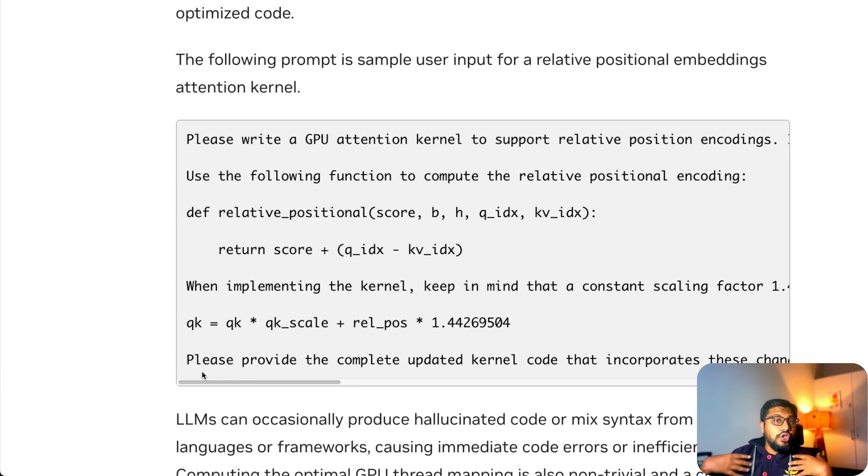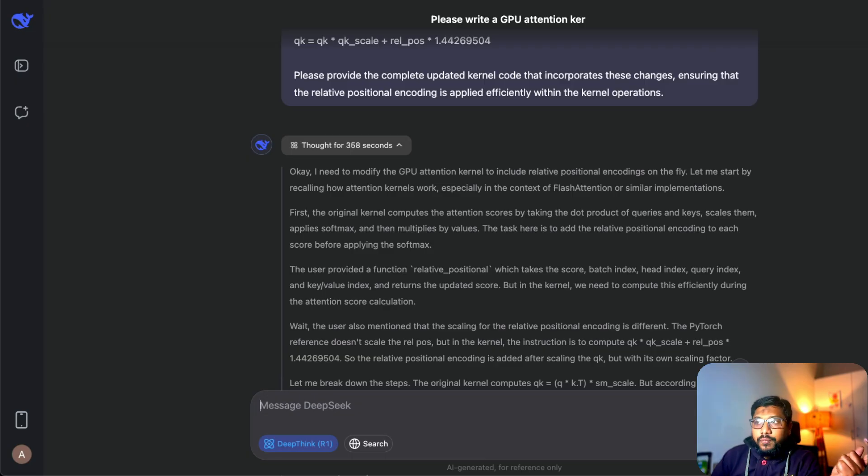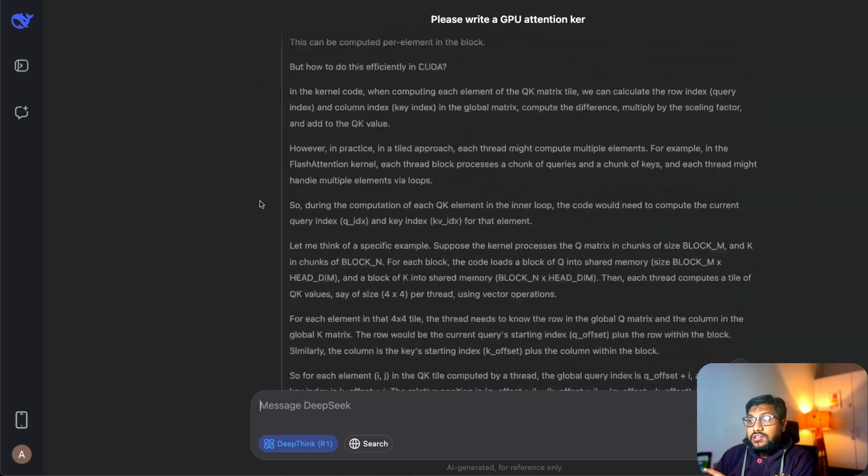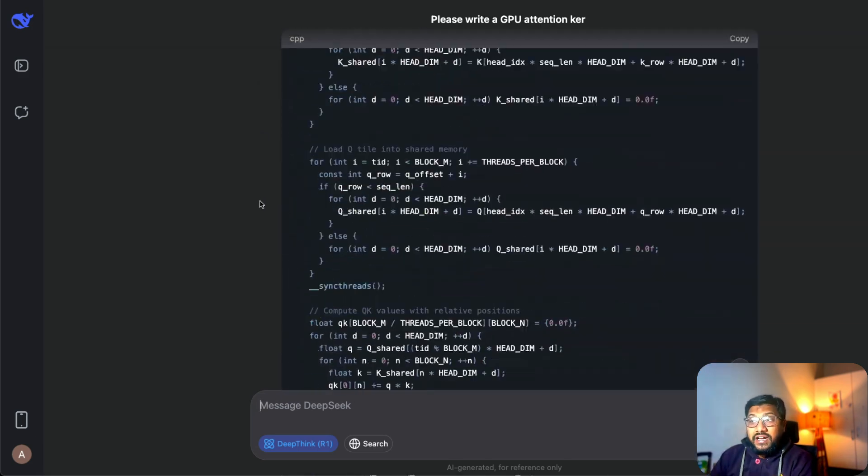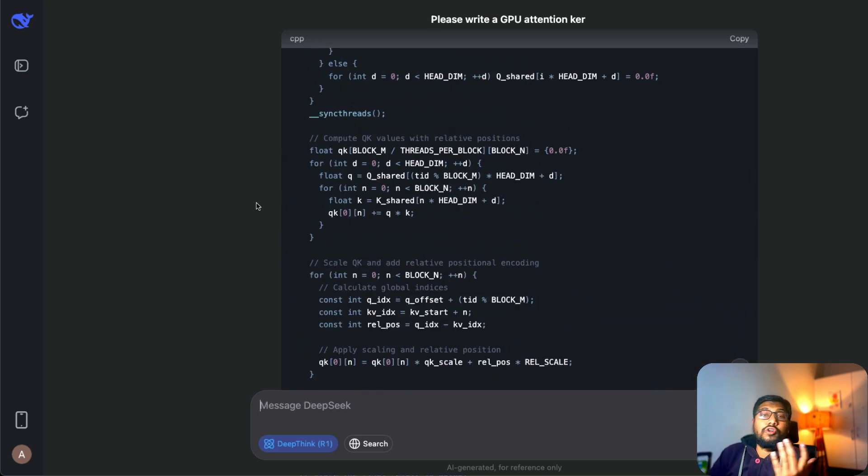I went to DeepSeek R1 and gave the same exact prompt, and this made DeepSeek R1 think for at least six minutes. In this particular case, 358 seconds it decided to think to come up with this particular answer, and it finally gave me a Python code that would do exactly the same. The only thing here is that I'm not doing any sort of verification, but this is not what NVIDIA just did.